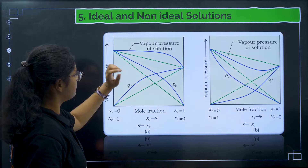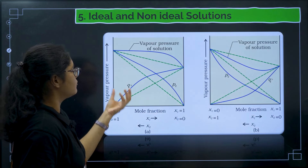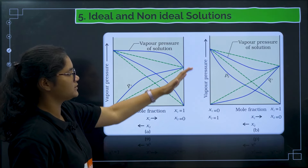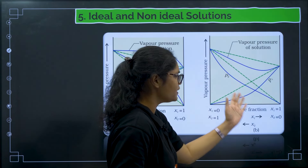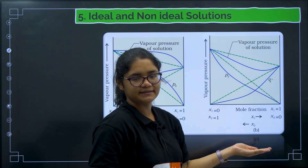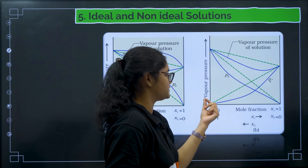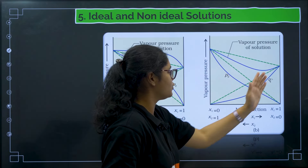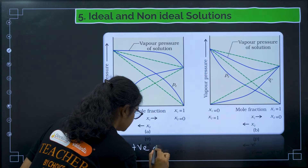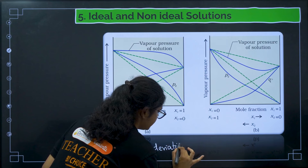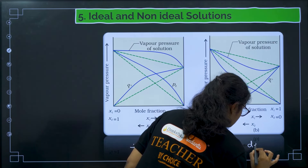Looking at the graphs: for positive deviation, P1, P2, and total pressure all increase above the ideal line. For negative deviation, P2 is attracted by P1 so less evaporates, and P1, P2, and total pressure all fall below the ideal line.